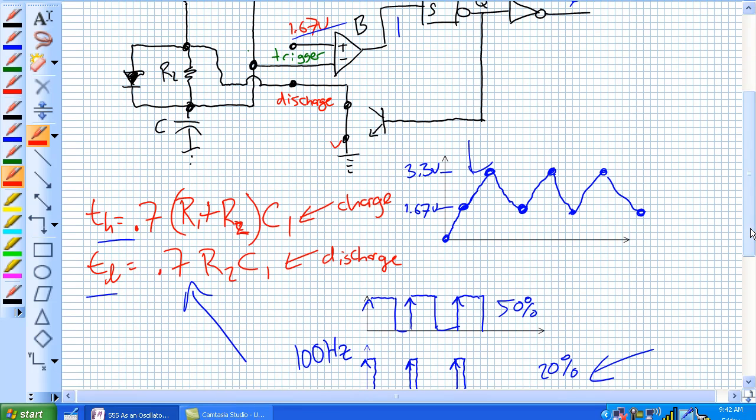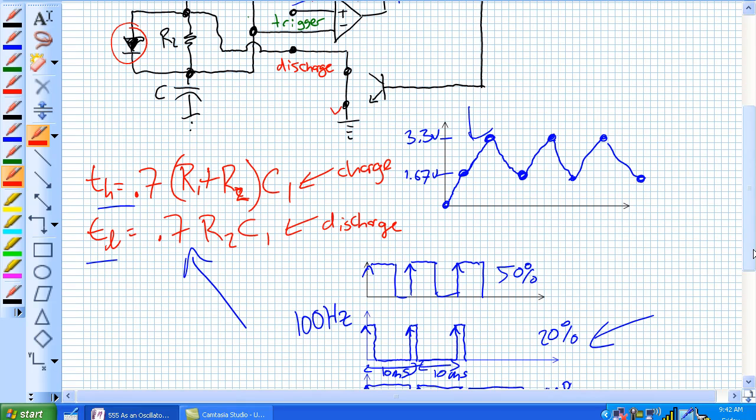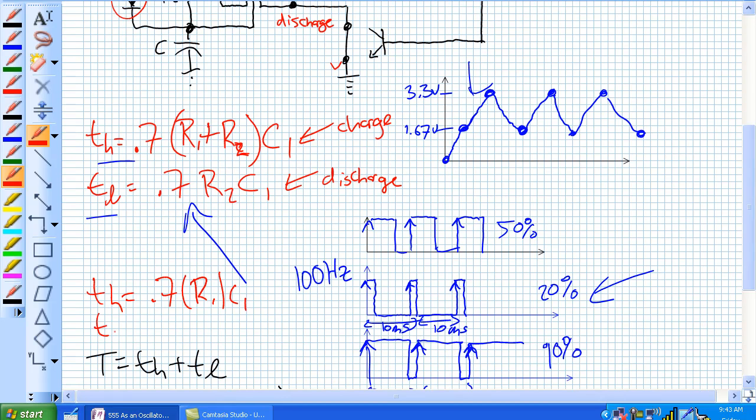What you get here is a situation where, through this little diode right here, you've created a situation where time high is equal to 0.7 R1, C1, time low is 0.7 R2, C1. If R1 and R2 are exactly equal to each other, you've got a perfect 50% duty cycle.